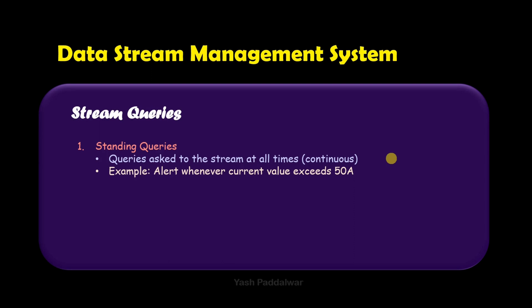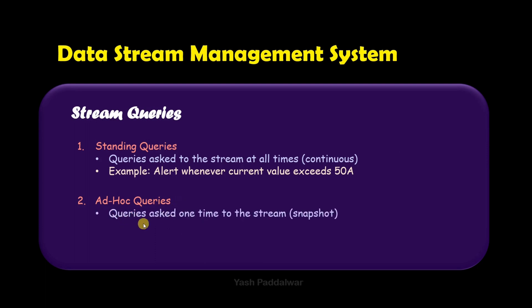For example, if we ask the stream processor with the query: 'alert me whenever the electric current value exceeds 50 amperes,' then according to this query, whatever stream is entering will be checked — if the current element is greater than 50 amperes an alert will be generated. Through this single query, continuous output streams will be generated.